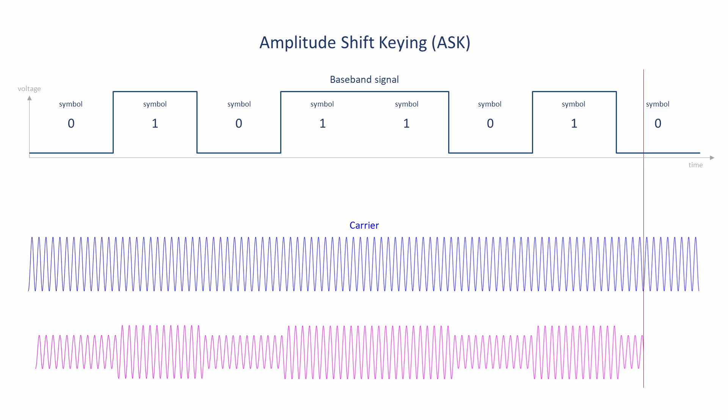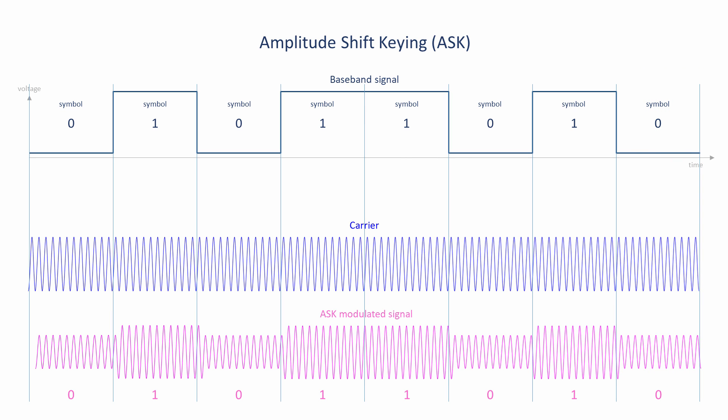Whenever there's a drop in the voltage of the digital signal, which never quite falls to zero, there's a drop in the amplitude of the carrier. When the voltage of the digital signal increases, so does the amplitude of the carrier.